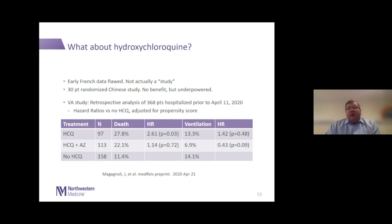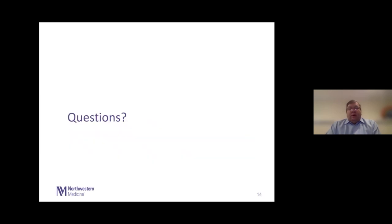Two other large observational populations — about 700 patients in New York across multiple centers, and about 600 patients at Columbia University — also didn't see a benefit from hydroxychloroquine. These observational studies are not going to give us the final answer and we clearly need controlled data to understand whether this agent will help at all. I'll wrap up there, turn it over to the other speakers, and hold questions for the end.